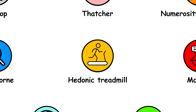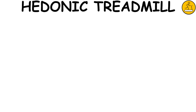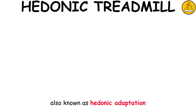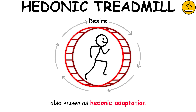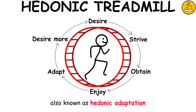Hedonic treadmill. The hedonic treadmill, also known as hedonic adaptation, is the observed tendency of humans to quickly return to a relatively stable level of happiness, despite major positive or negative events or life changes.